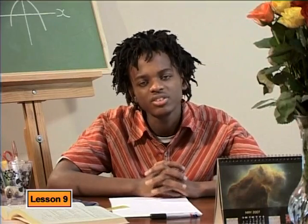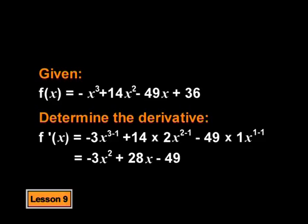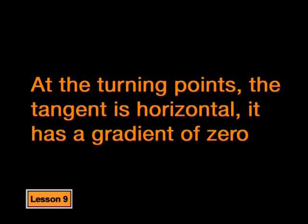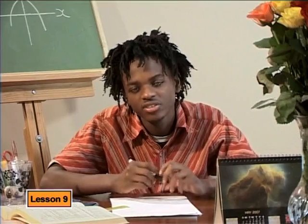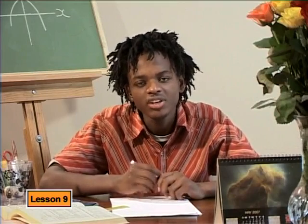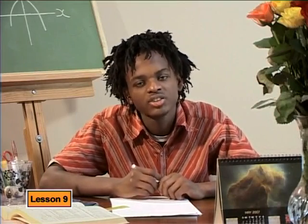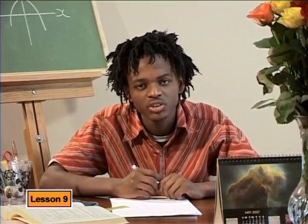Well done. But now tell me something - why did you need to determine the derivative? The derivative gives us the gradient of a tangent of the graph at any point on the graph. And at the turning point, the tangent is horizontal - it has a gradient of 0. So if I let the derivative equal 0, I will have an equation to solve, and it's going to give me the x-coordinates of the turning point.